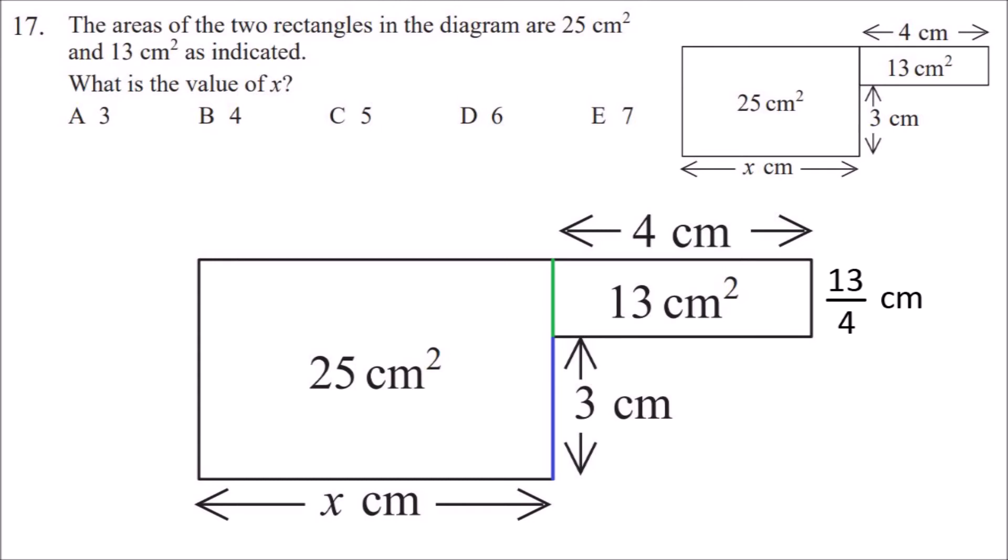One of the side lengths of the larger rectangle is equal to one of the sides of the smaller rectangle that we just worked out, so that's 13 over 4, and then add 3 centimeters.